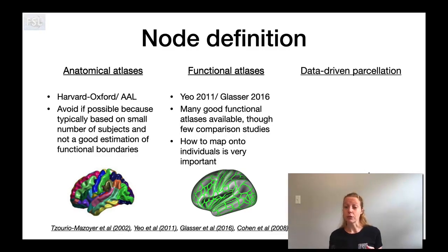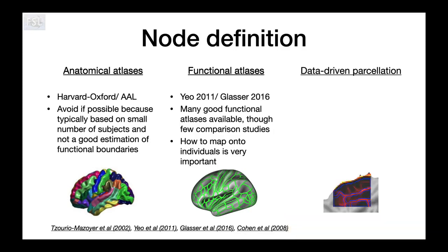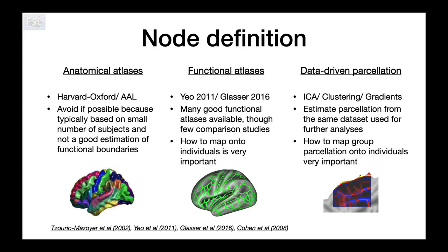Functional atlases tend to be a better choice for resting state fMRI compared with anatomical atlases. However, how to map these group-level atlases onto each individual is very important. The last category is data-driven parcellation, which means using the subjects and data from your own study to derive the nodes from that same dataset. This is also essentially a functional method, but unlike functional atlases available in the literature estimated by other people, data-driven parcellation defines nodes based on your own data using methods like ICA, clustering, or gradients.